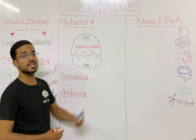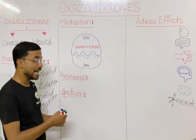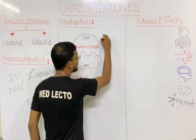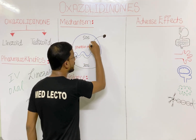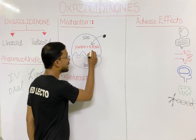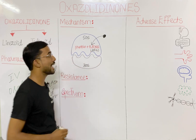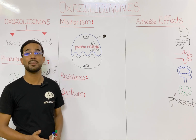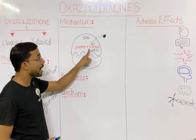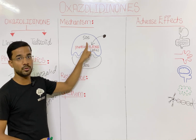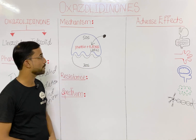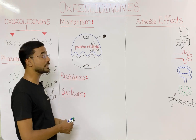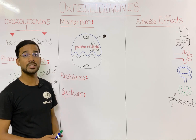When someone takes an oxazolidinone like linezolid or tedizolid, this antibiotic acts on the ribosomal RNA — specifically the 23S ribosomal RNA. We categorize the different components of the ribosome on the basis of their sedimentation rate. The 50S subunit contains 23S ribosomal RNA.